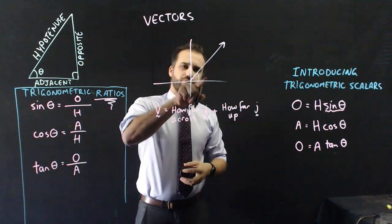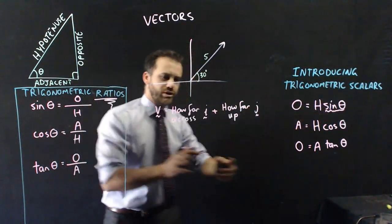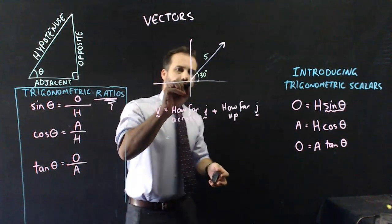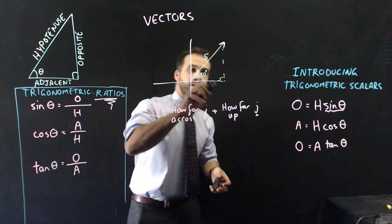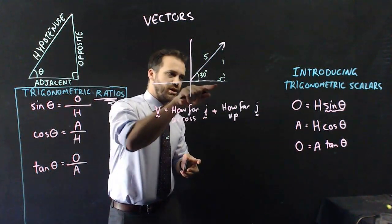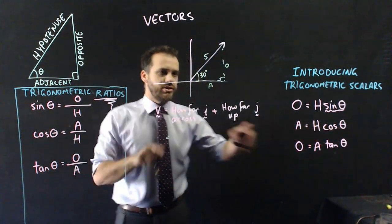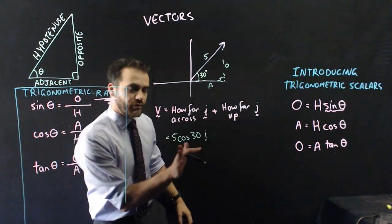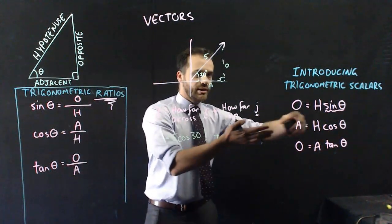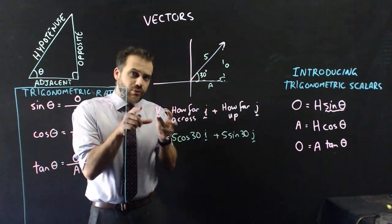If I knew this angle right here and if I knew this length right here, I can now employ my trigonometric scalars to figure these out without any rearrangement. How far across it goes and how far up it goes, you can see I've got a right-angled triangle here. This is the adjacent side here and this is the opposite side here. So adjacent is going to be H cos theta using my trigonometric scalar, 5 cos 30, plus how far up using my trigonometric scalar, this one here, I can say that that's 5 sine 30 j.